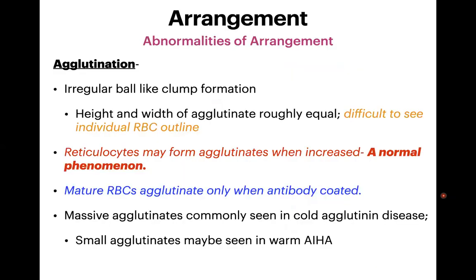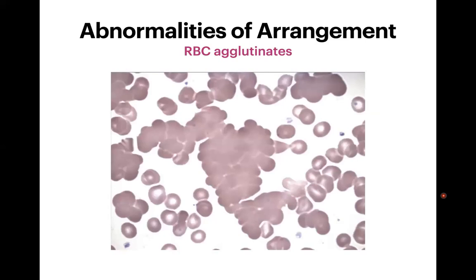The next abnormality of arrangement is agglutination, where cells form irregular ball-like clumps with roughly equal height and width, and individual RBC outlines are difficult to identify — unlike rouleaux. Reticulocytes may form normal agglutinates when increased and should not be called abnormal. Mature RBCs only agglutinate when antibody-coated. Massive agglutinates are commonly seen in cold agglutinin disease but can rarely occur in warm agglutinin disease.